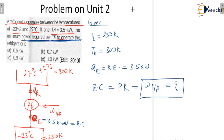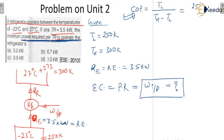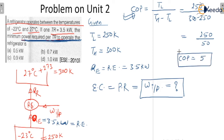First, apply the COP formula for the reversible cycle: COP equals TL upon (TH minus TL). Substituting, that means 250 divided by (300 minus 250), which is 250 divided by 50. So the COP for this cycle is 5.